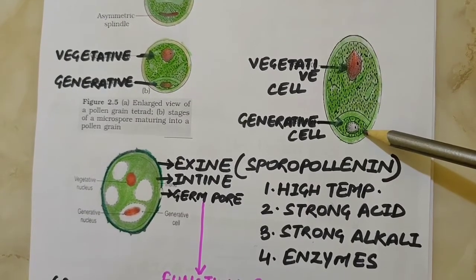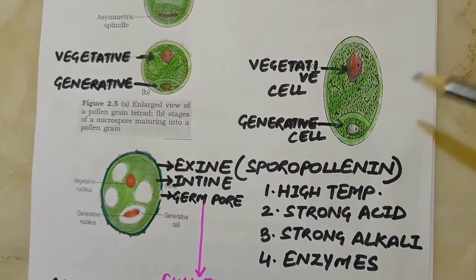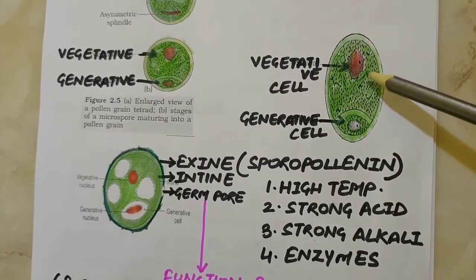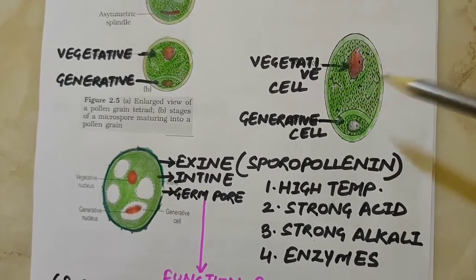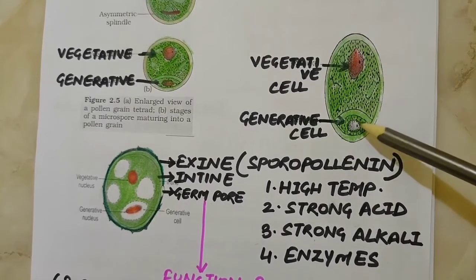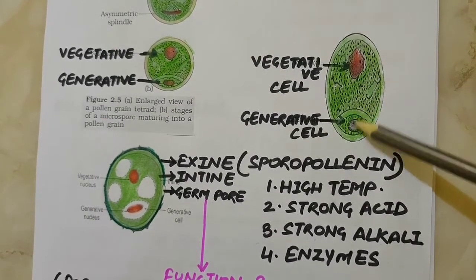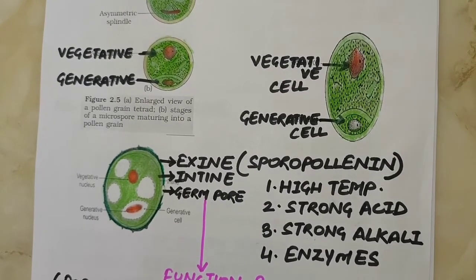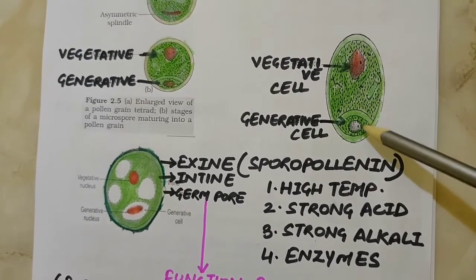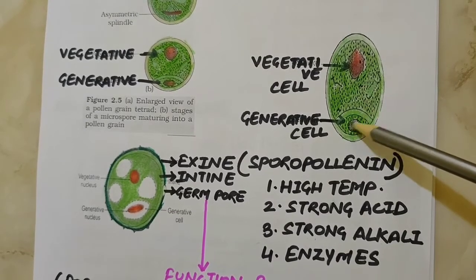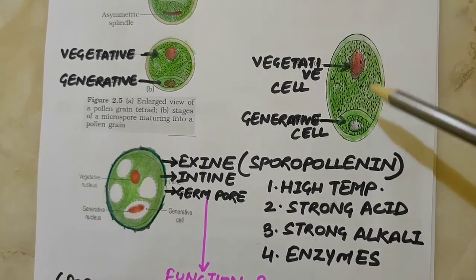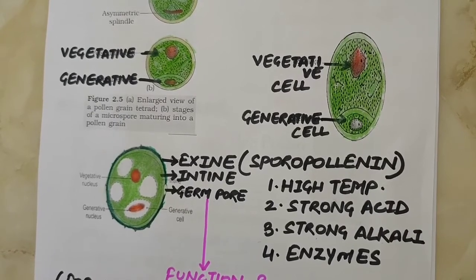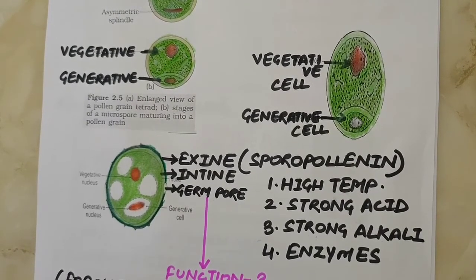The generative cell produces two male gametes. In over 60% of angiosperms, pollen grains are shed at the two-cell stage. In the remaining species, the generative cell divides mitotically to give rise to two male gametes before pollen grains are shed, meaning they shed in the three-cell stage. We will discuss later how the pollen tube is formed and how male gametes reach their destination.